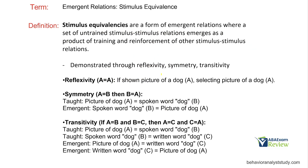How do emergent relations form? First, we're going to talk about stimulus equivalence — it used to have its own section on the task list, and it's probably the one you're most familiar with. Stimulus equivalence is the idea that emergent relations are formed when a set of untrained stimulus-stimulus relations emerge as a product of training and reinforcement of other stimulus-stimulus relations. When we read definitions like this, people get confused — let's simplify that.